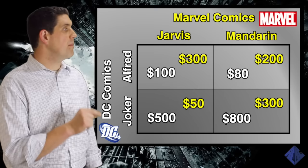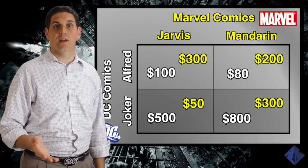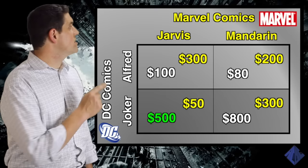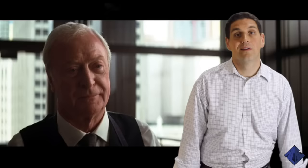Now let's talk about a dominant strategy. If you have a dominant strategy, you should make that choice no matter what — it doesn't matter what the other person does. Let's see if DC has a dominant strategy. If Marvel chooses Jarvis, DC can choose between Alfred (earning $100) or the Joker (earning $500) — they'd rather have $500. If Marvel chooses the Mandarin, DC would again choose the Joker. That means the Joker is DC's dominant strategy. With these numbers, there's no reason for DC to ever make a series about Alfred. Sorry, Alfred.